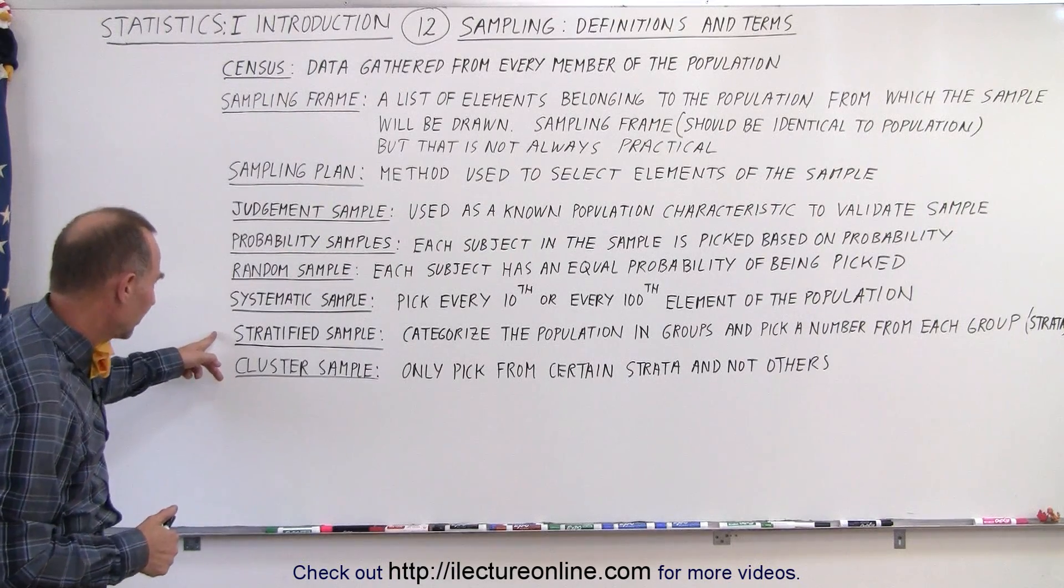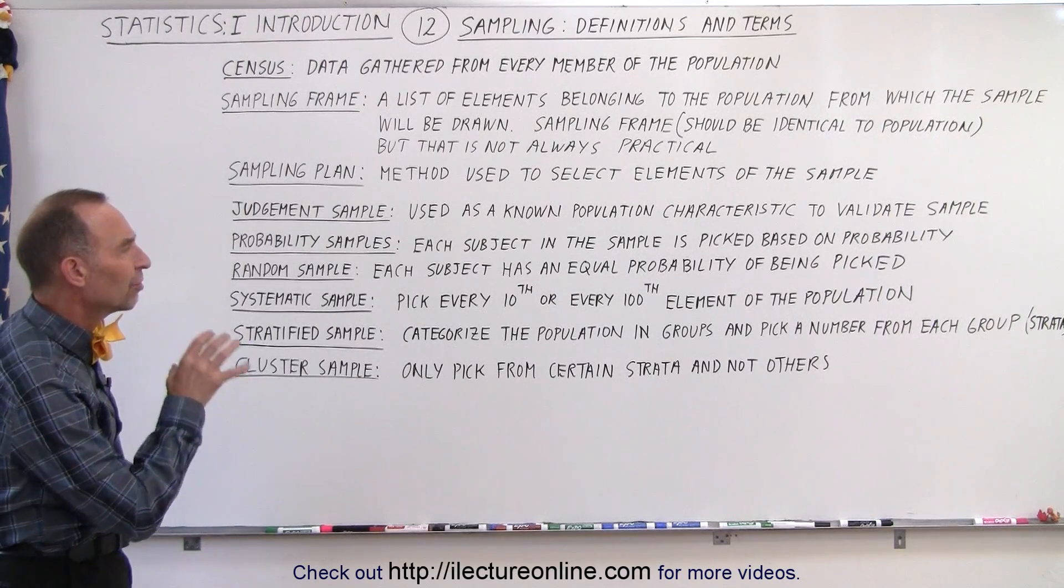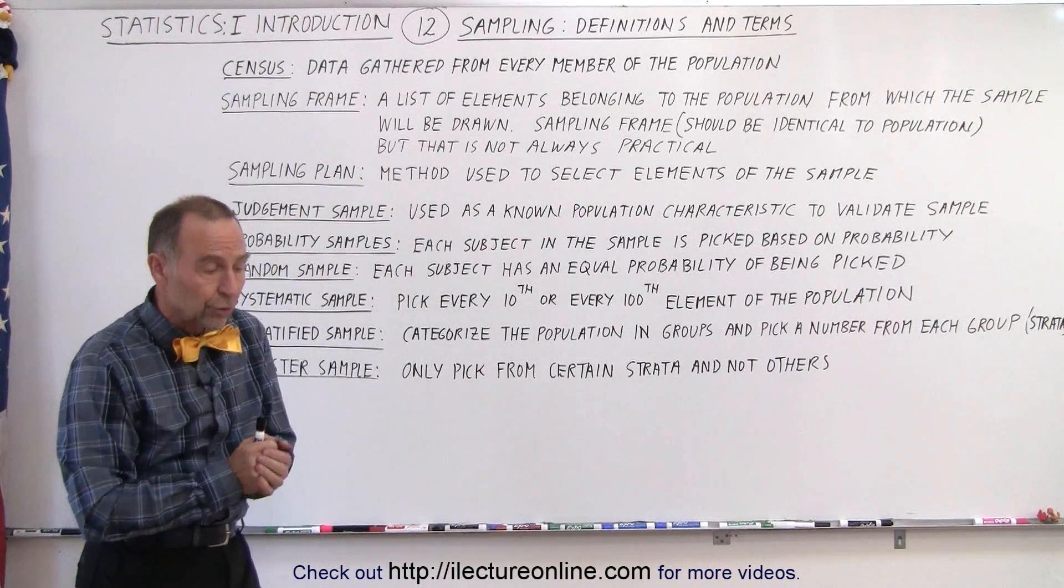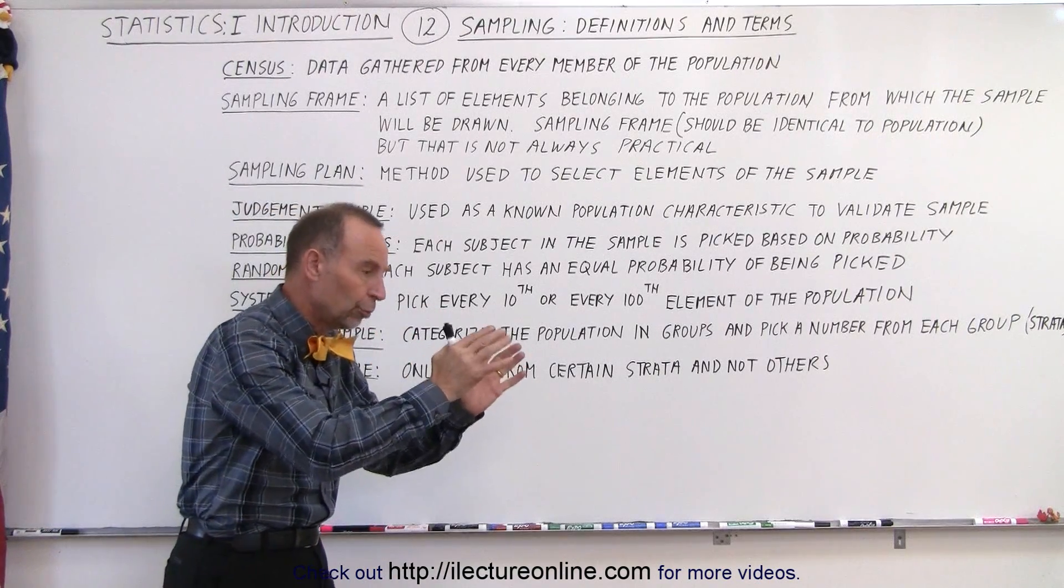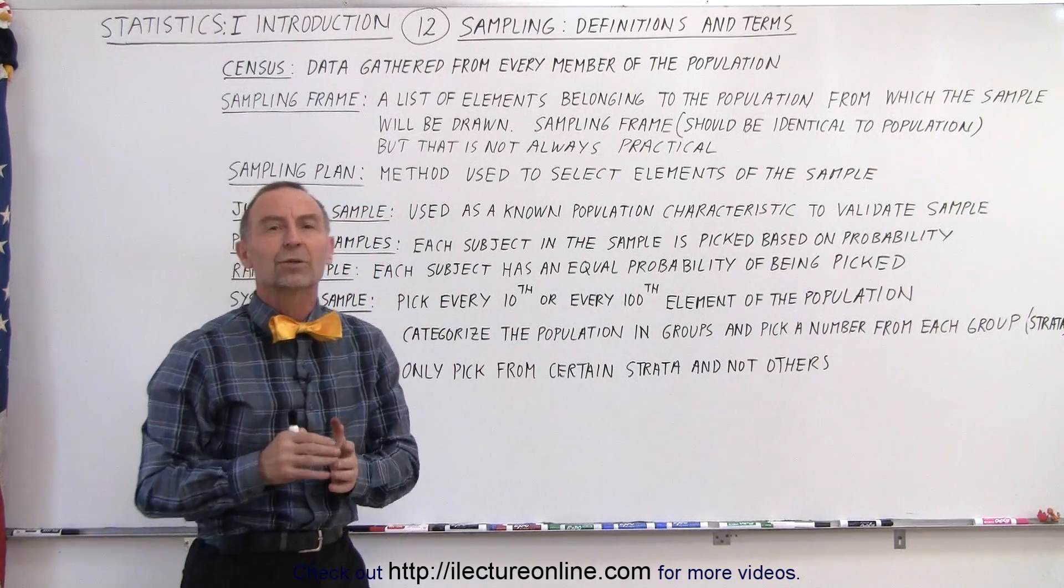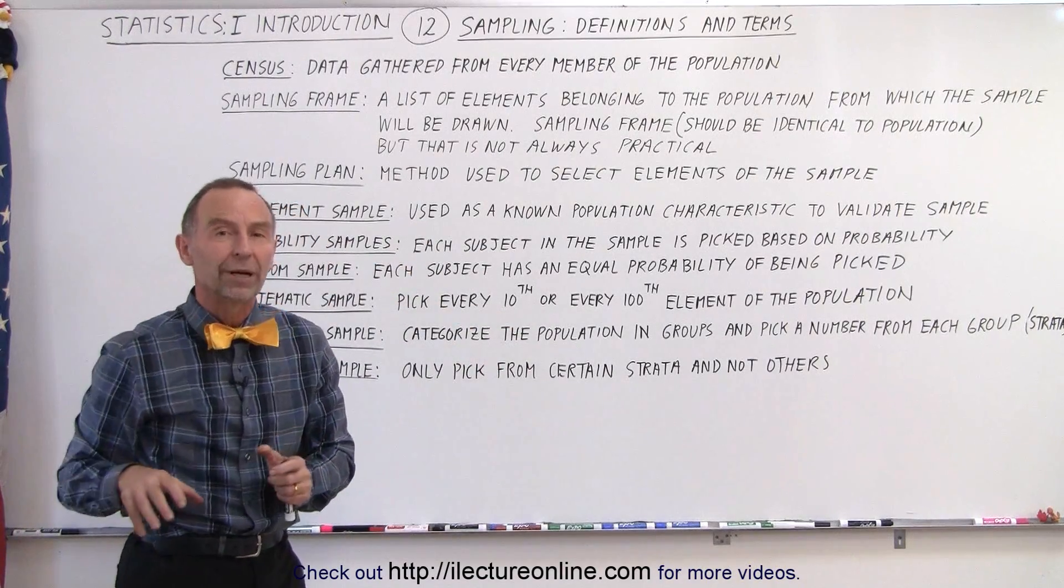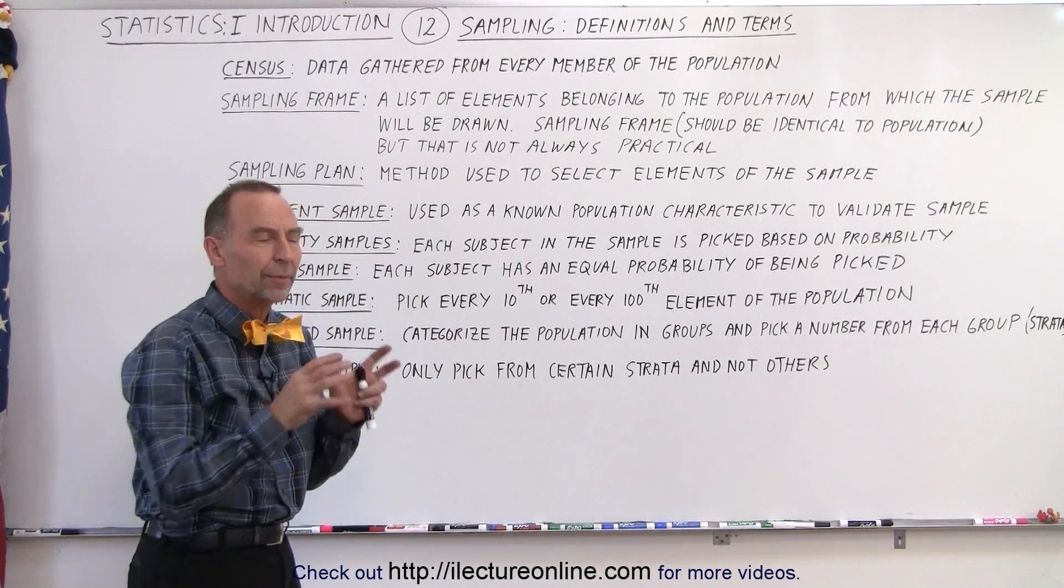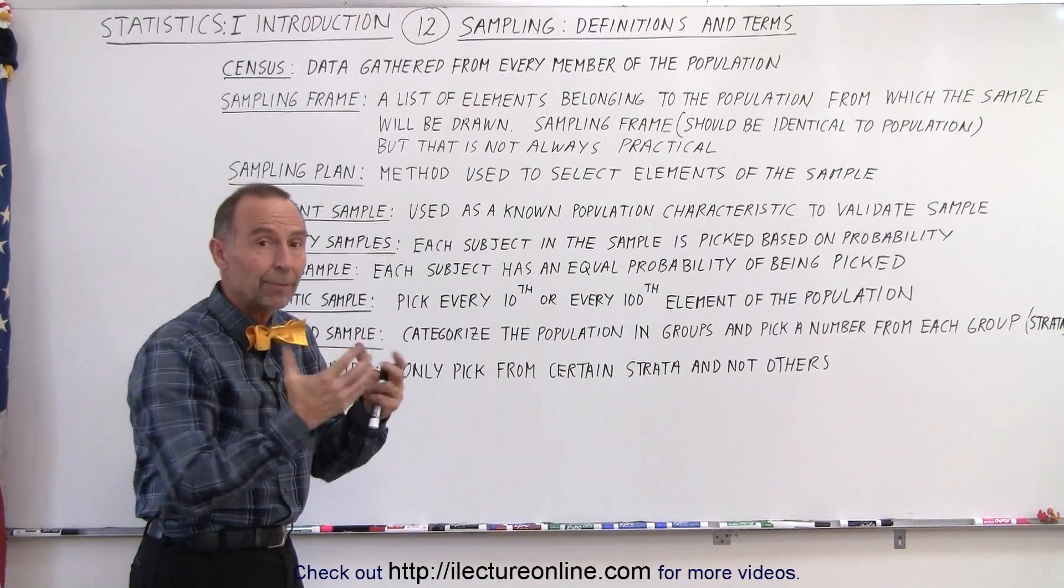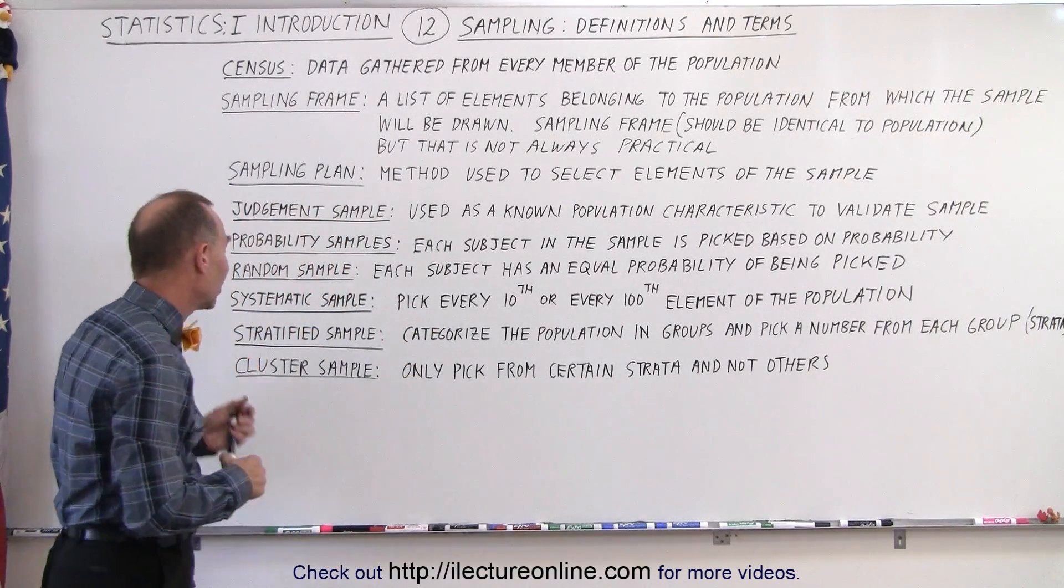Stratified sampling. Stratified, yeah, that's spelled correctly. That's the characterization of the population in groups. And then you pick a number from each group. For example, you go ahead and you take a certain group that you know is going to be mostly farmers, and you take a certain group that's going to be mostly factory workers, and you take a group that's going to be mostly engineers, and then you pick a certain number from each group. That's called stratification. You want to make sure that every type of person in your population is represented, and you want to pick an equal number from each. So that's called stratified sample.